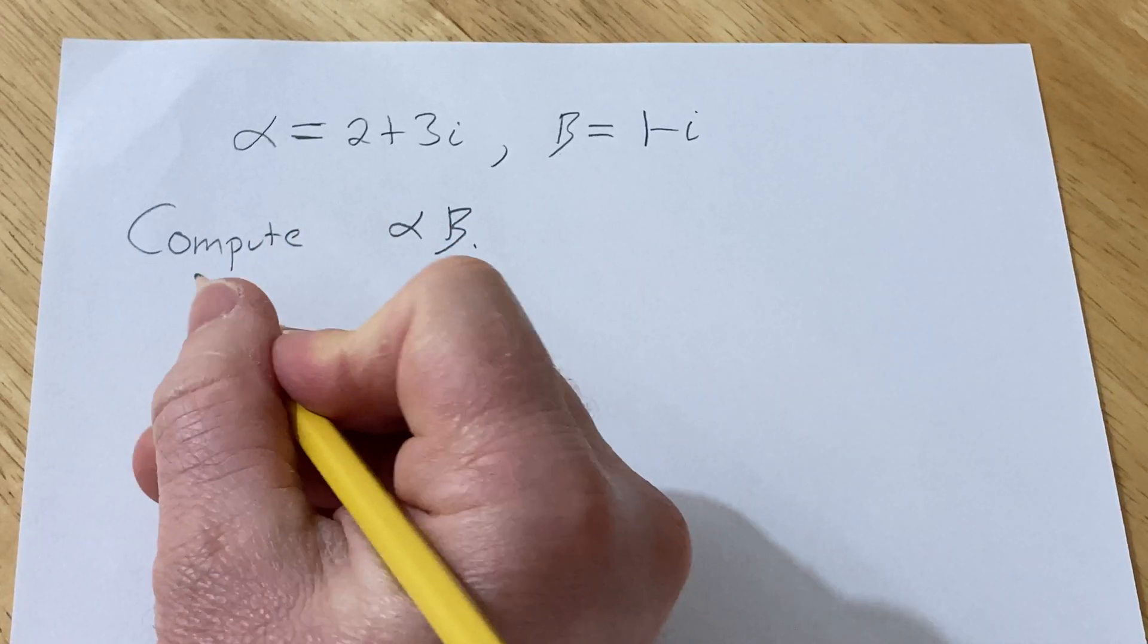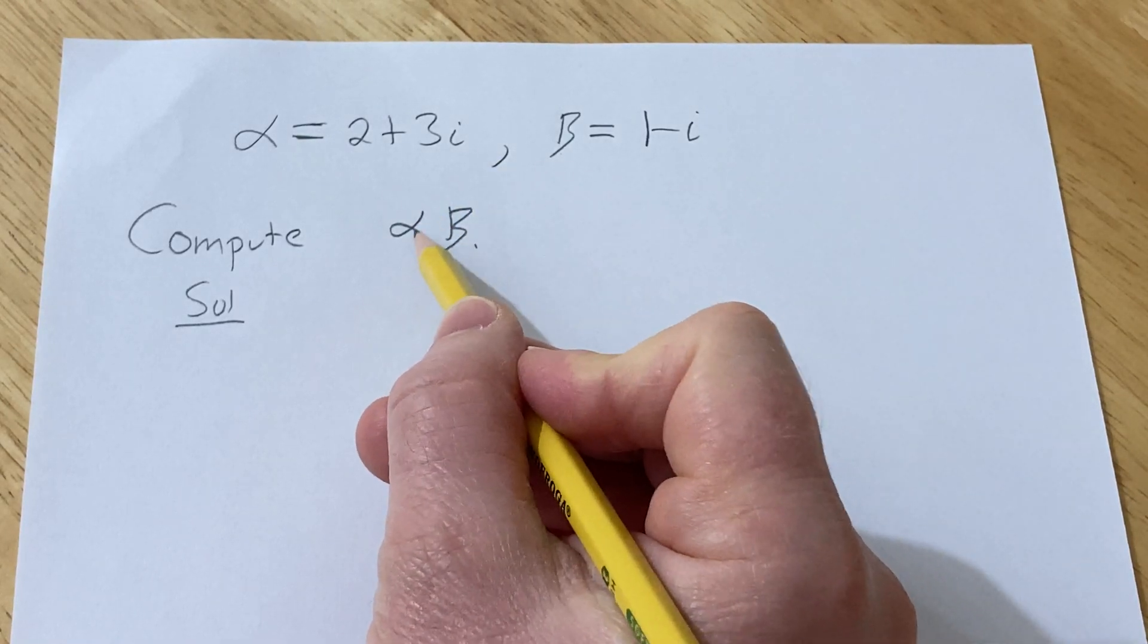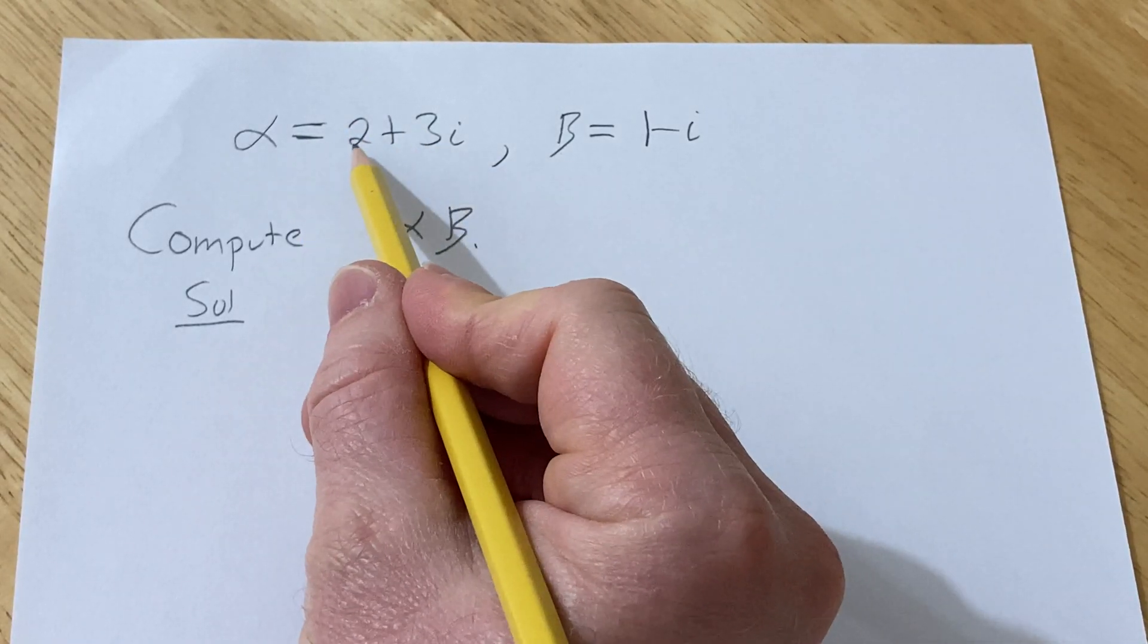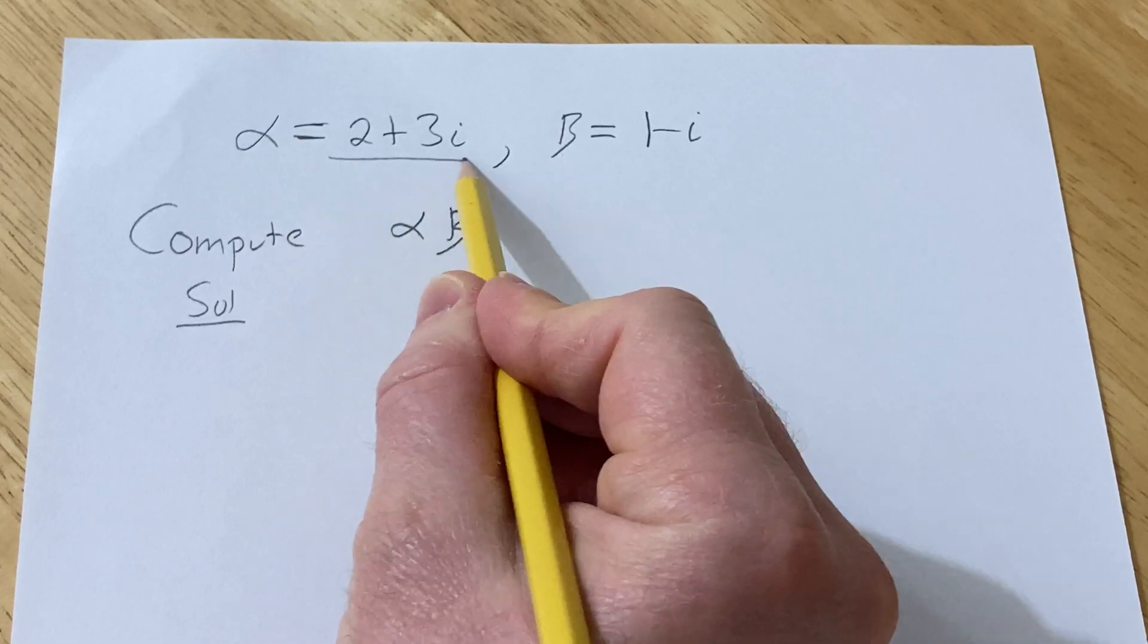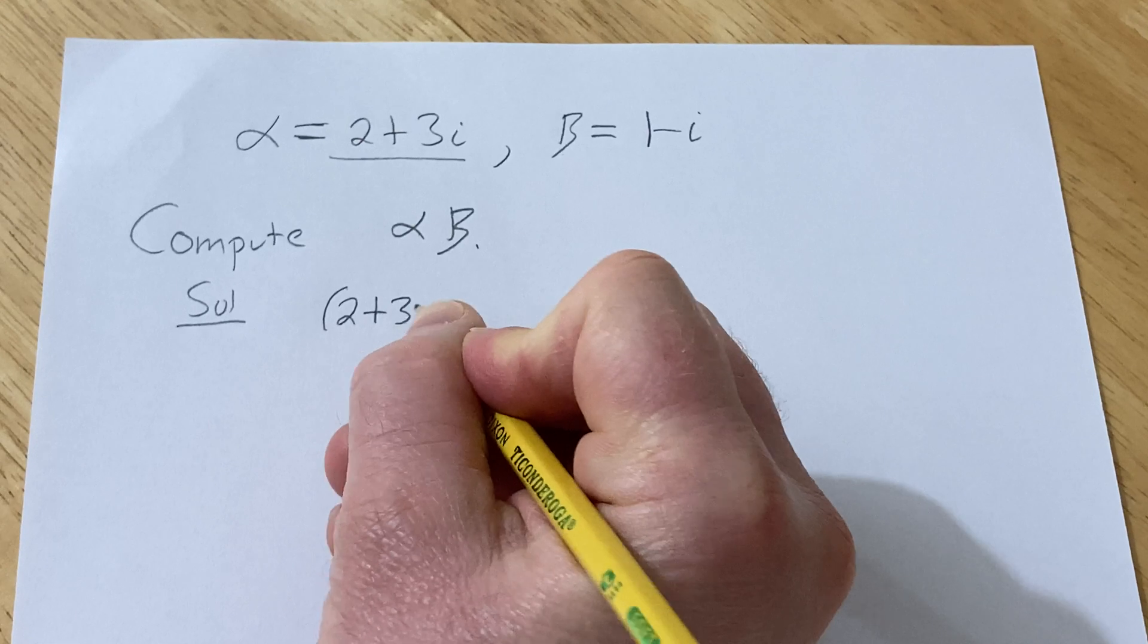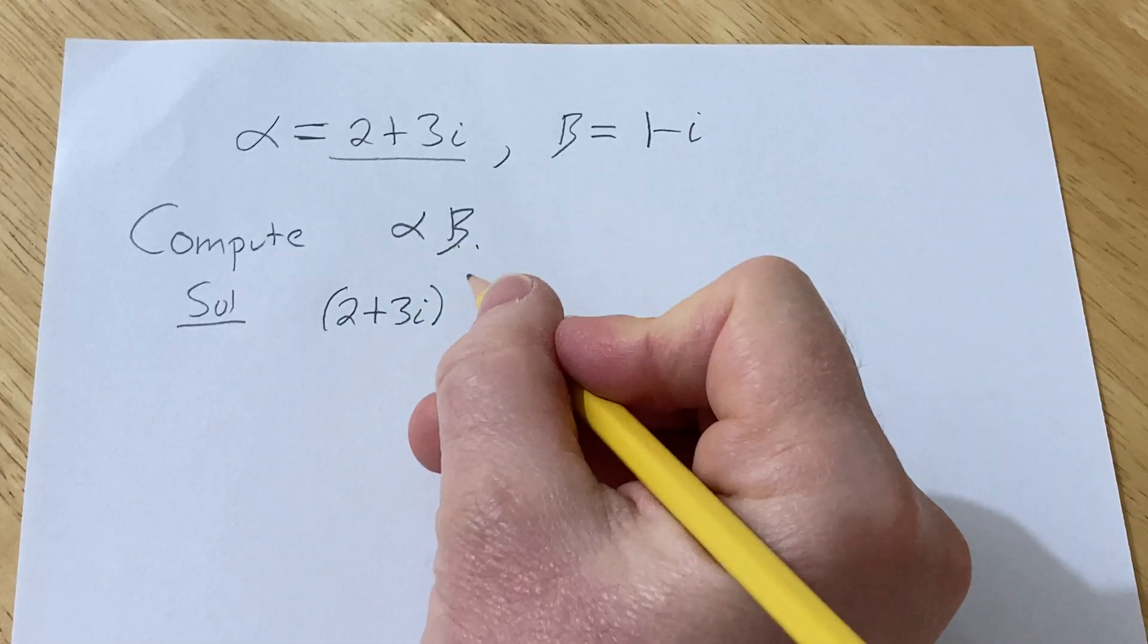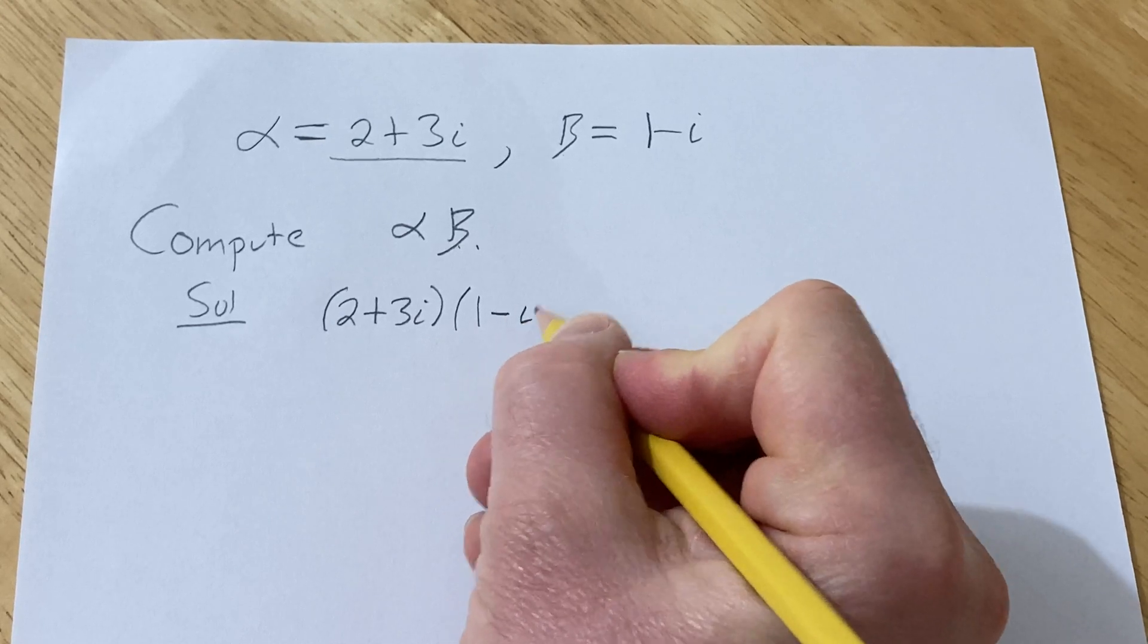Let's go ahead and work through it. Solution. So to start we will replace alpha with the complex number it represents. So instead of alpha I'm going to write 2 plus 3i, parenthesis 2 plus 3i. And then here we have beta which is 1 minus i.